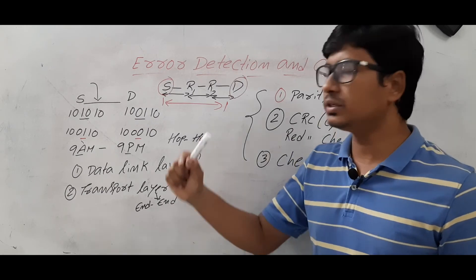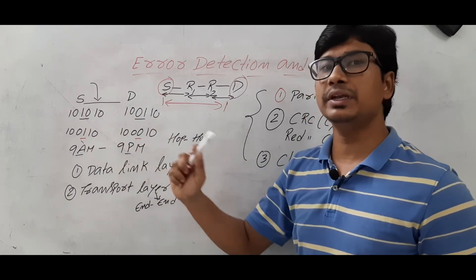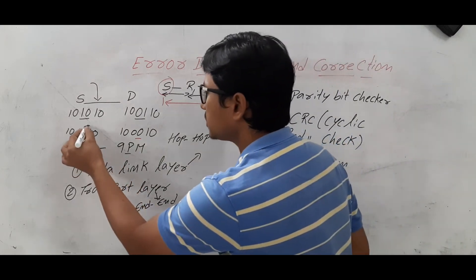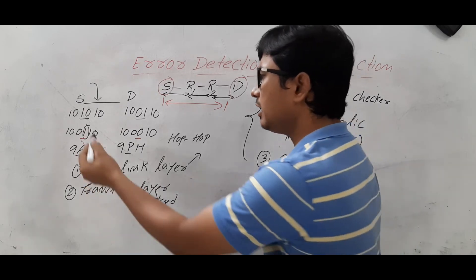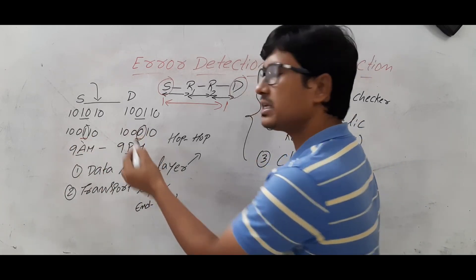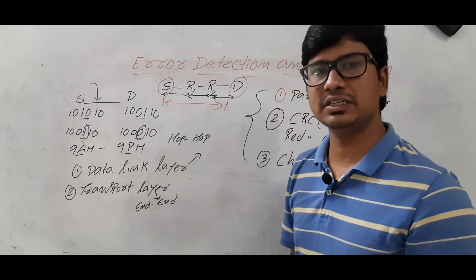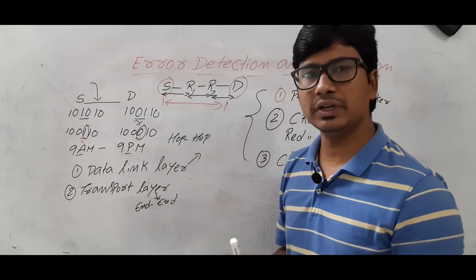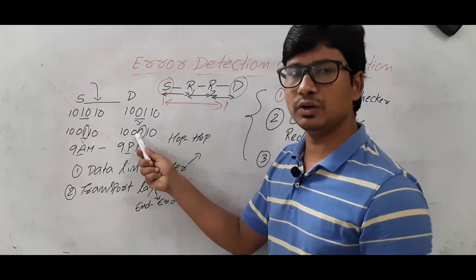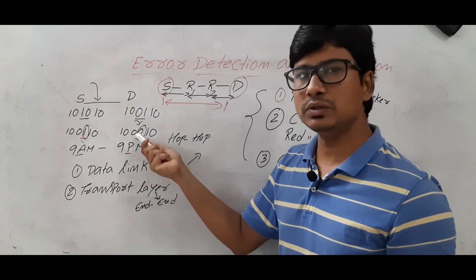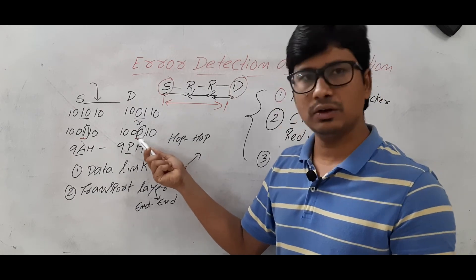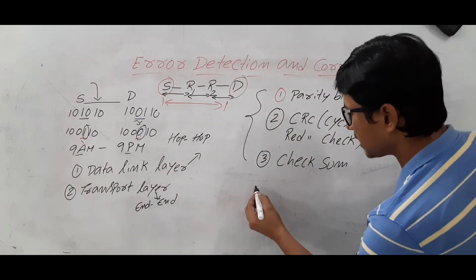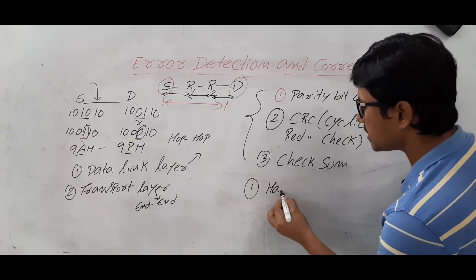Once you detect an error, you need to identify exactly where the bit error occurred, and then correct it. For example, if the source sent a 1 but the destination received a 0, and we can identify that the error occurred at that specific location, then we can correct it by changing the 0 back to a 1. Since data is in the form of zeros and ones, the alternate of zero is one. The error correction strategy we use is called Hamming code.